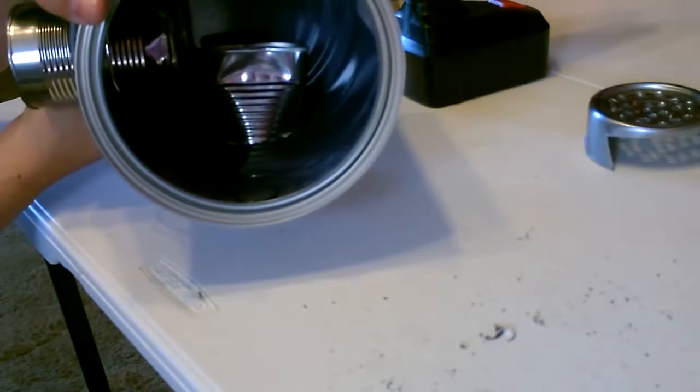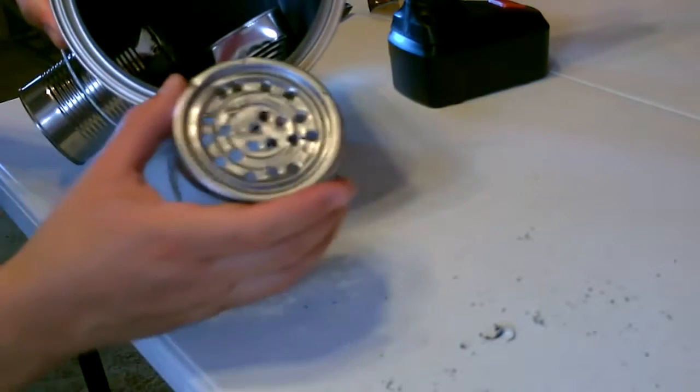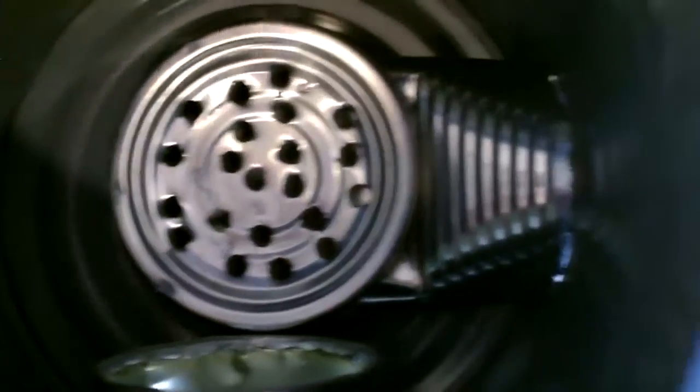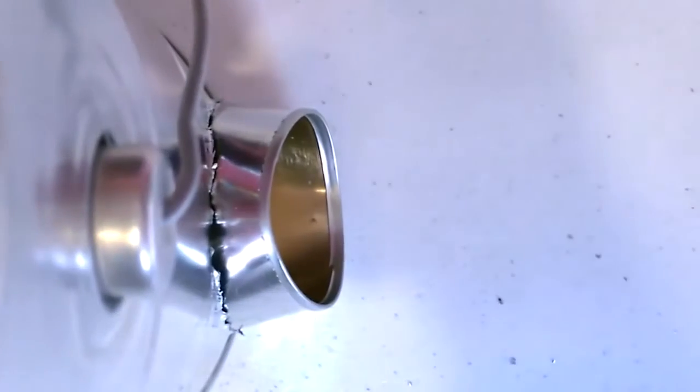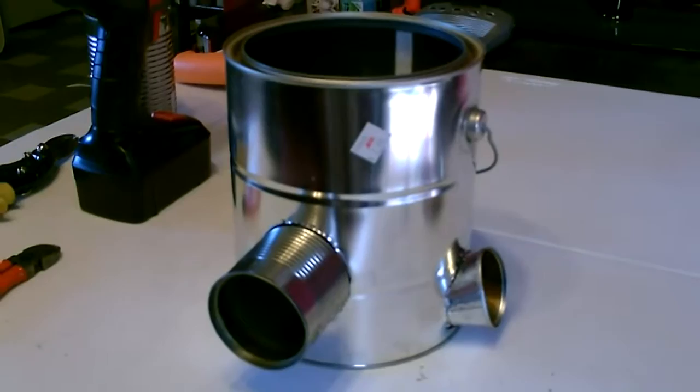So there's the inside. Now that we got it like this just drop the tuna can in over the air inlet. Okay the hardest part is done now, now you just drop in the stack and add the gravel.